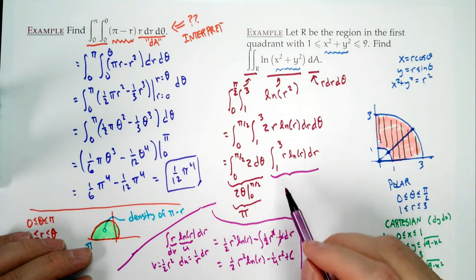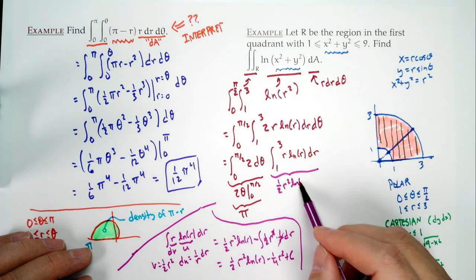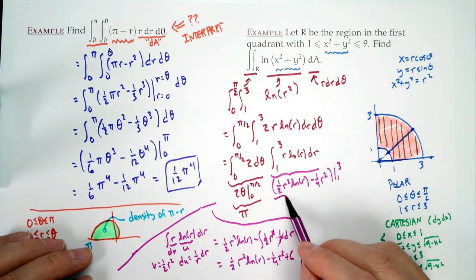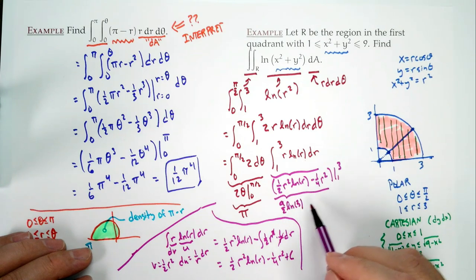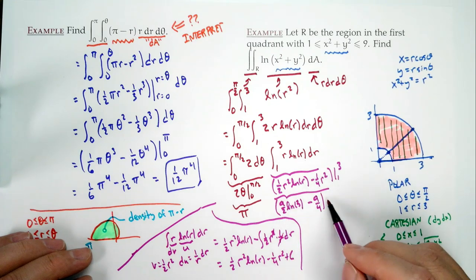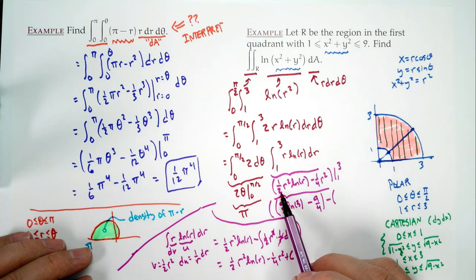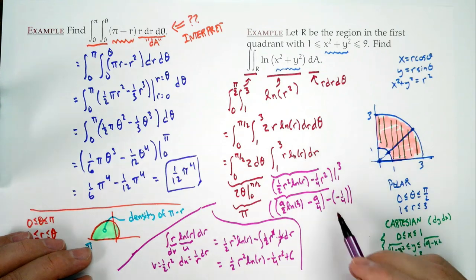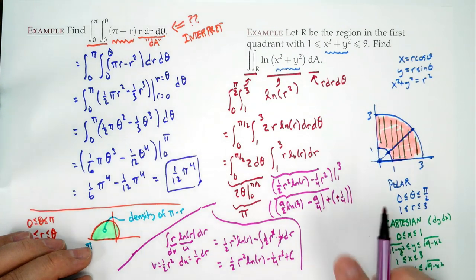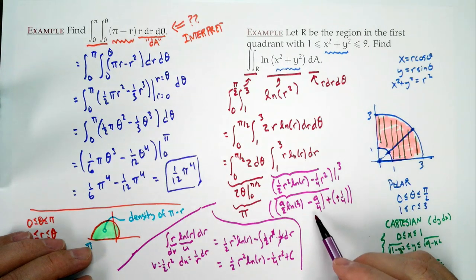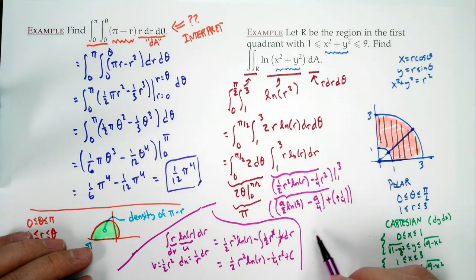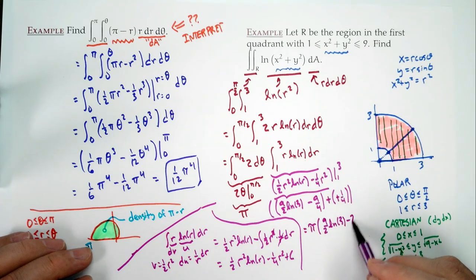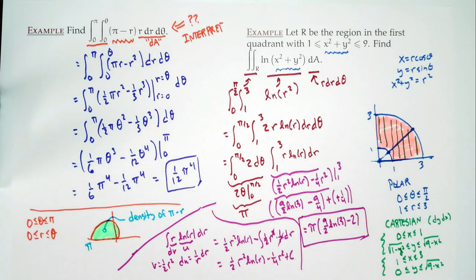Evaluating [½r²·log(r) − ¼r²] from 1 to 3: plugging in 3 gives 9/2·log(3) − 9/4. Plugging in 1 gives ½·log(1) − ¼ = −¼. Subtracting: 9/2·log(3) − 9/4 + ¼ = 9/2·log(3) − 2. So the final answer is π·(9/2·log(3) − 2).